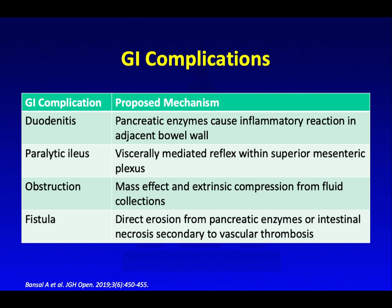In thinking about local GI complications from acute pancreatitis, there are multiple complications. Patients may develop duodenitis, due to pancreatic enzymes being very erosive and causing an inflammatory reaction in the adjacent bowel wall. Those inflammatory mediators may also cause paralytic ileus, thought to be due to a viscerally-mediated reflex within the superior mesenteric plexus. Fluid collections and inflammation associated with pancreatitis can cause mass effect and extrinsic compression of the bowel causing mechanical obstruction, and they can also cause fistula due to direct erosion from pancreatic enzymes or intestinal necrosis secondary to vascular thrombosis.